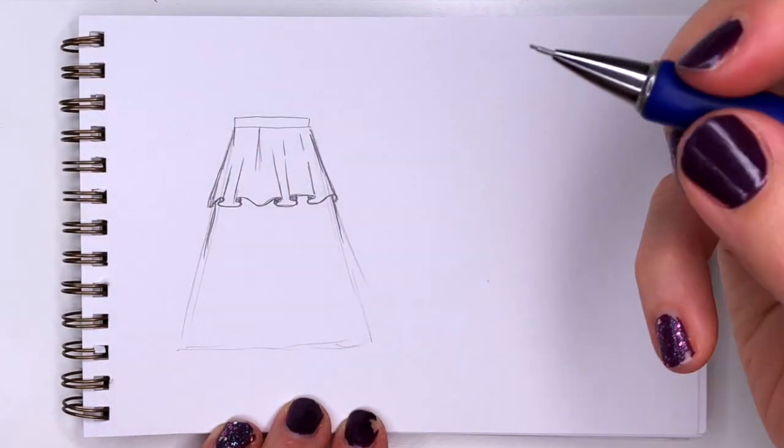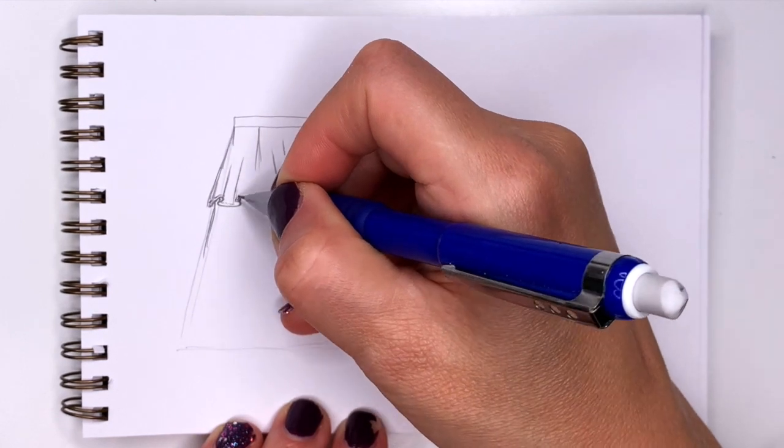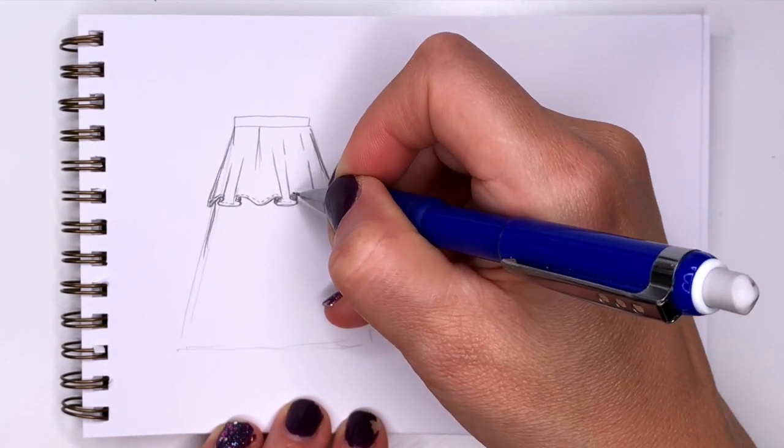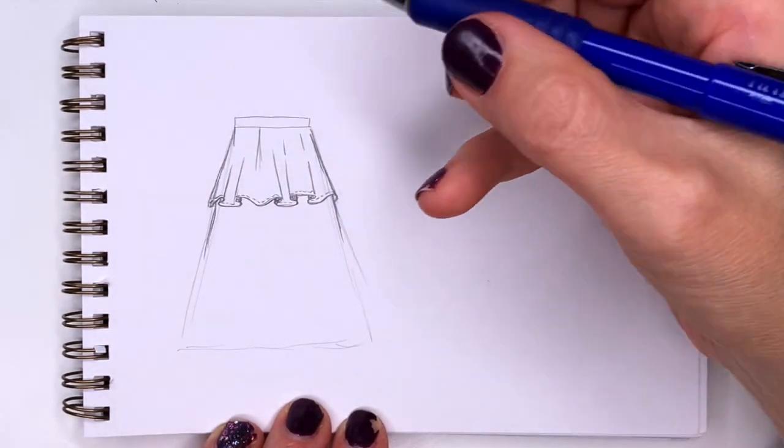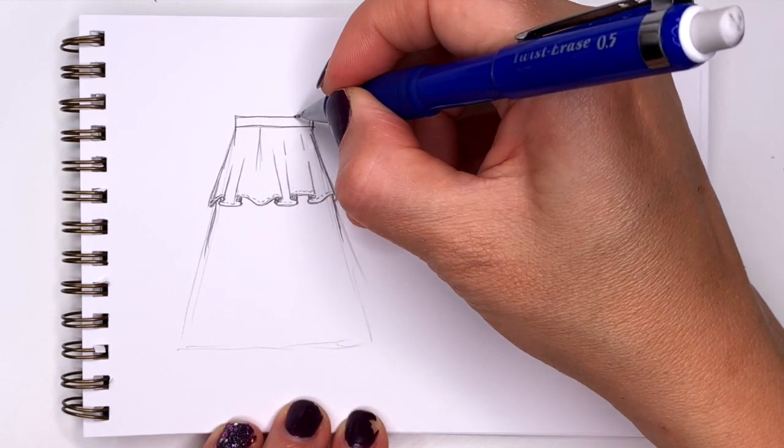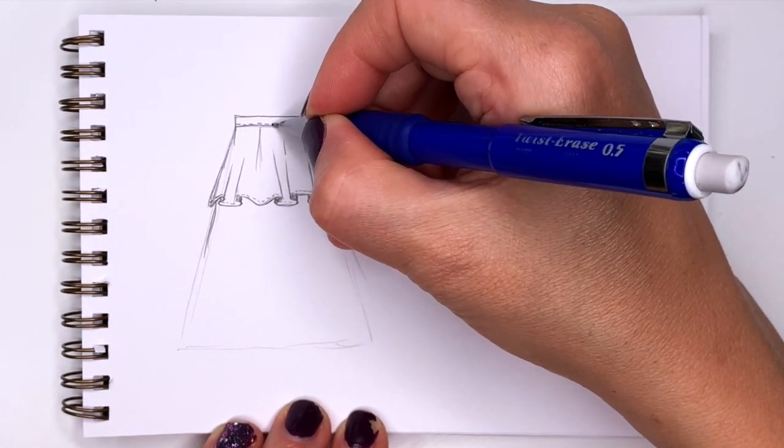Now if you want to you can also add little perforated lines close to the edge to show the seam lines. And you can enhance your belt the same way. You can fold it some and then add tiny little lines to the seams.